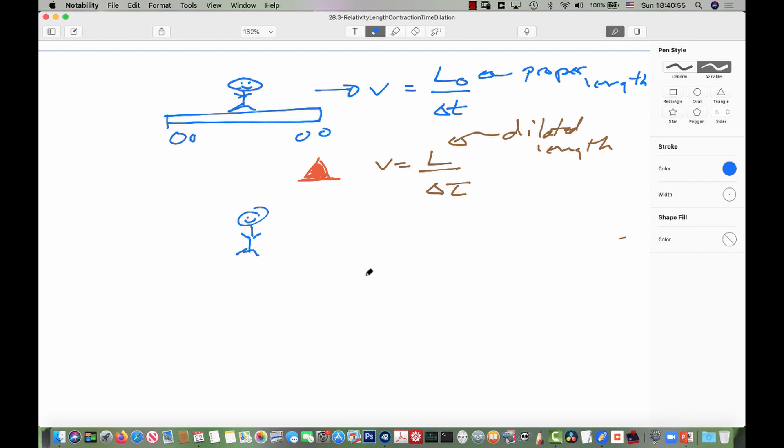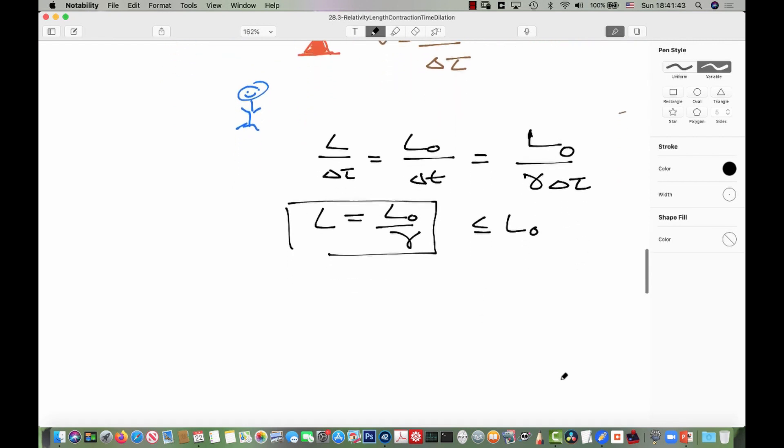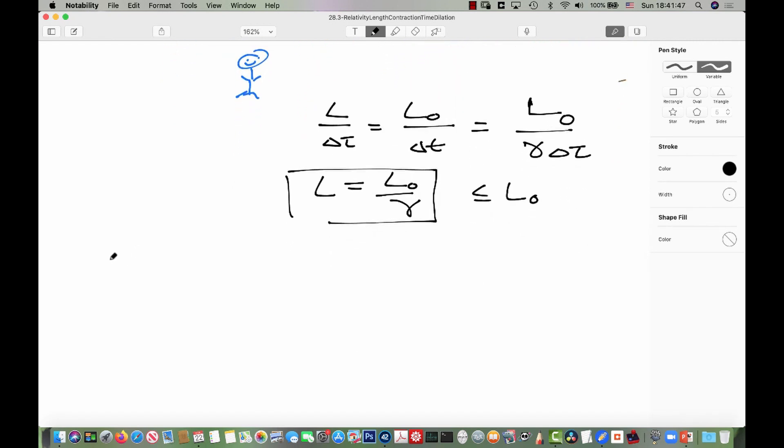So, what do we have? So, we have that the dilated length over the proper time is equal to the proper length over the dilated time because they're both measuring the speed. So, that's going to be the proper length over gamma times the proper time from what we found before. So, what we get is that the dilated length is equal to the proper length over gamma. This will always be less than or equal to the proper length. So, the moral of the story here is moving meter sticks are shorter.